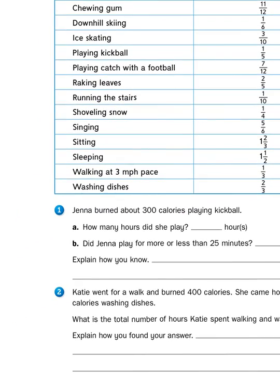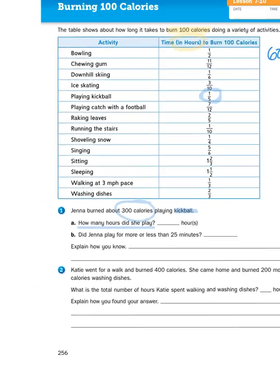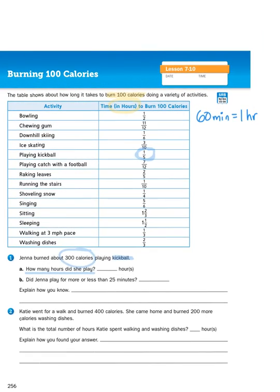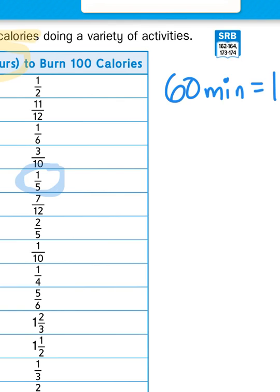Let's look at the first problem. Jenna burned about 300 calories playing kickball. How many hours did she play? Well, up here in the table, it shows that for 100 calories, you have to play kickball for one-fifth of an hour. So this first problem, 1A, how many hours did she play? If there are three groups of 100 in 300, all I have to do is take the amount of time it takes to burn 100 calories, which is one-fifth hour, and multiply it by 3.